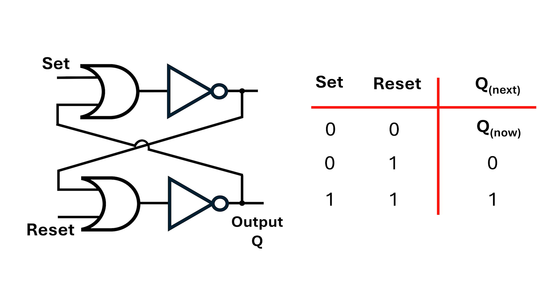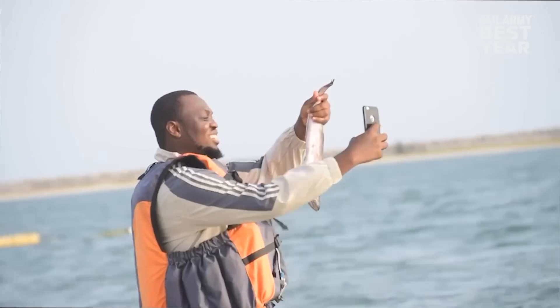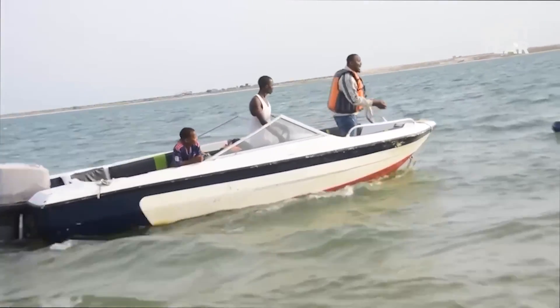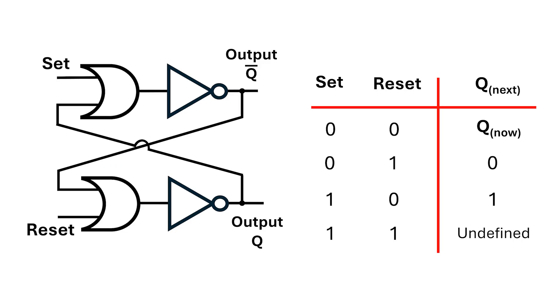But in the graphic, on the third line, I had both set and reset asserted. This was a mistake, and it should read 10. Sometimes we just do dumb things. The configuration for when both set and reset are asserted is actually undefined, and the next state depends on which one is asserted longer.